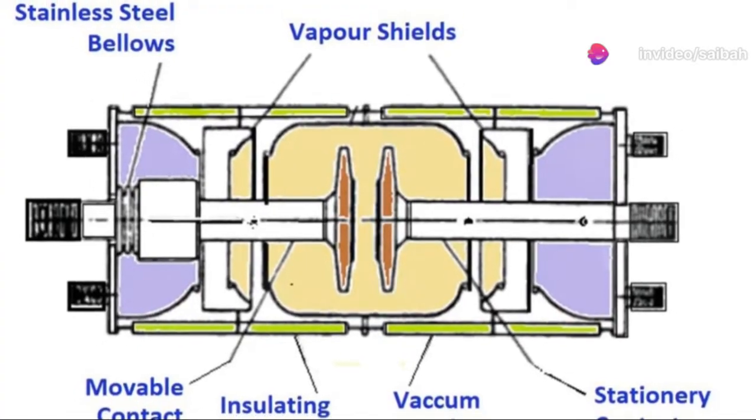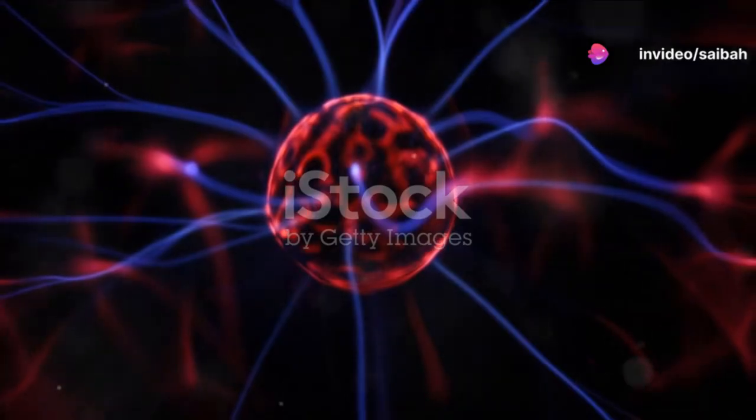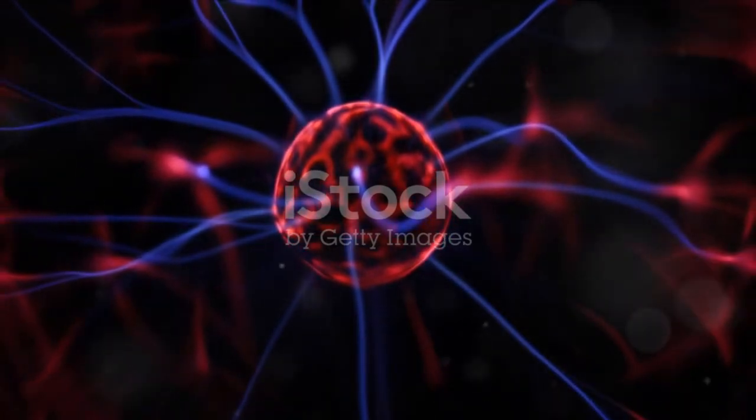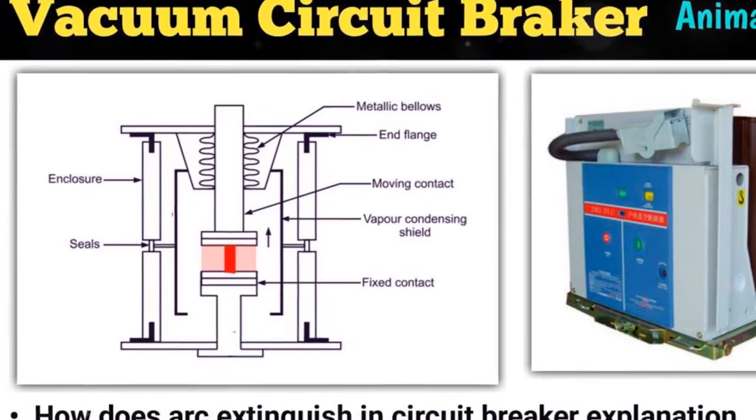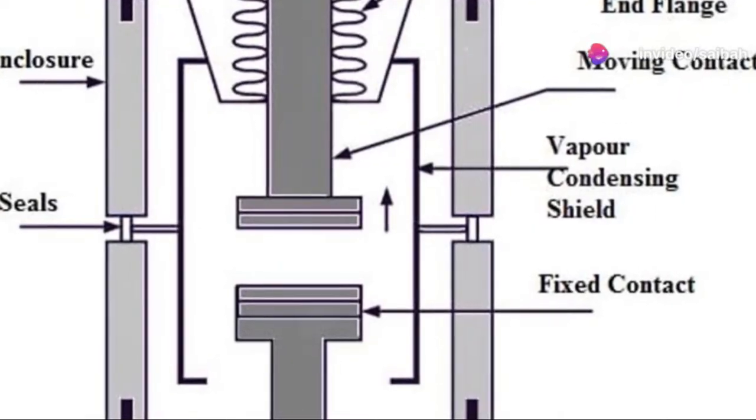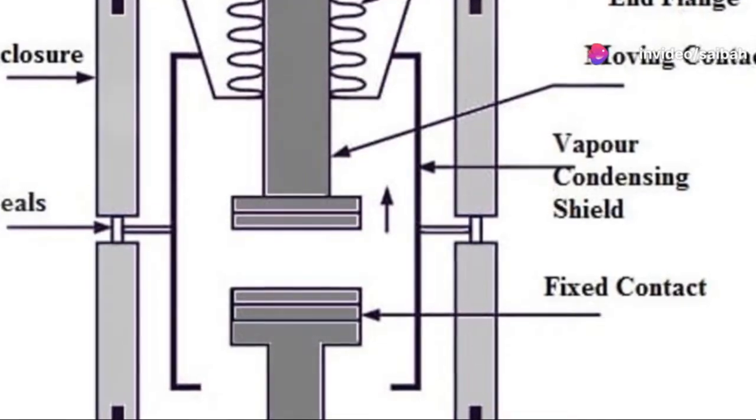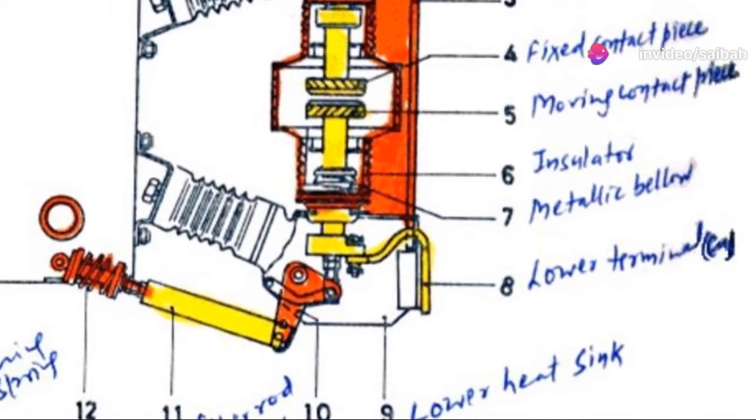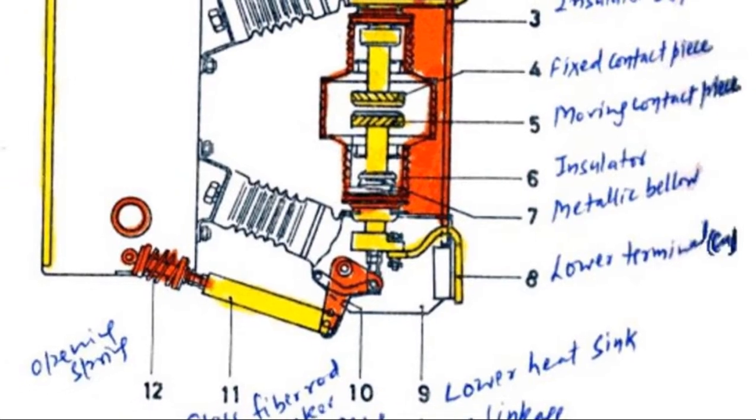Let's talk about the principle of operation. When the contacts inside a VCB separate, an arc forms. This happens due to ionization between the gap. But here's where the magic happens. In a VCB, this arc is quickly extinguished thanks to the high vacuum environment, which rapidly recovers its dielectric strength once the arc goes out.